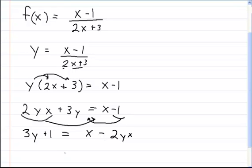on the right side. So that equals x times (1 minus 2y), which equals 3y plus 1.